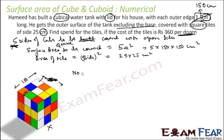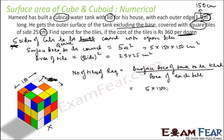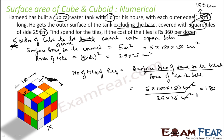The number of tiles required equals the surface area to be tiled divided by the area of each tile. That is (5 × 150 × 150) ÷ (25 × 25). The centimeter square units cancel, and you get 180 tiles as the answer.